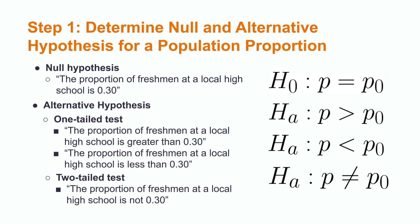A left-tailed test uses a less than sign, rather than a greater than sign. An example of a left-tailed alternative hypothesis would be: the proportion of freshmen at a local high school is less than 0.30.